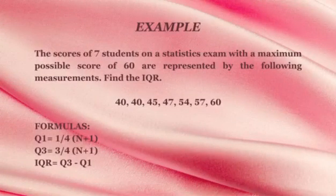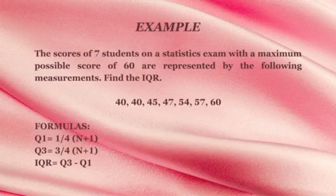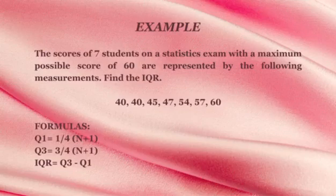For better understanding, we have an example here. The scores of 7 students on a statistics exam with a maximum possible score of 60 are represented by the following measurements. Find the IQR: 40, 40, 45, 47, 54, 57, and 60.